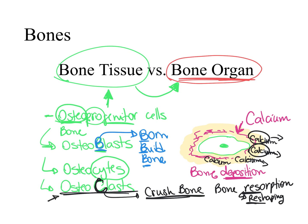The osteoprogenitor cells divide and differentiate into osteoblasts, which then get stuck within the extracellular matrix and become osteocytes. The question is, where are these osteoprogenitor cells coming from? They come from the embryonic skeleton.